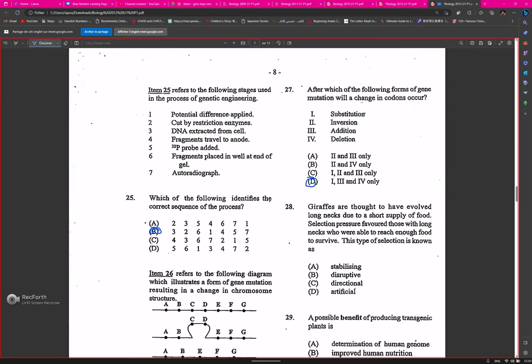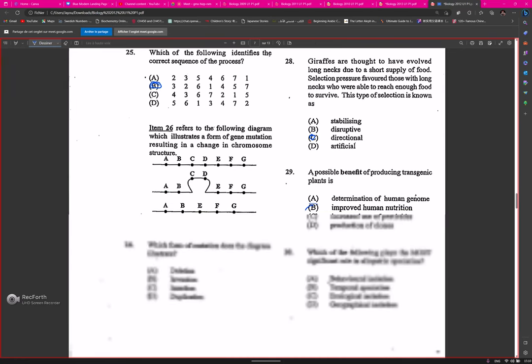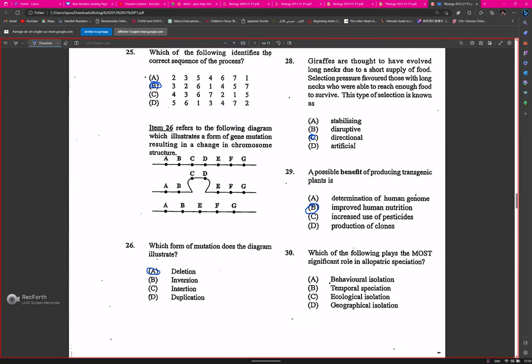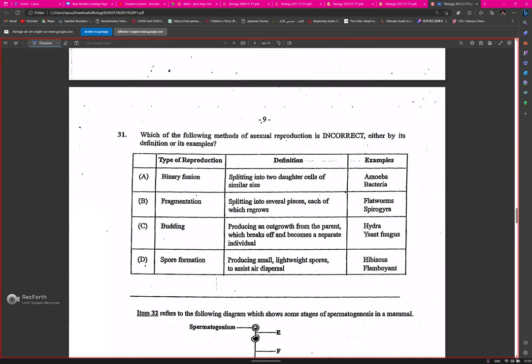Question twenty-eight about giraffes, this repeated. It's directional selection. Then the possible benefit: improved human nutrition. Then we have geographical isolation. Isn't it a bit tiring seeing these questions over and over again?